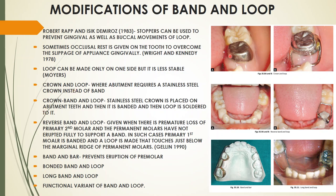Crown and loop: when the abutment tooth is grossly destructed, a band cannot be placed, so a stainless steel crown is used instead — this is the crown and loop modification. Crown band and loop: a crown is placed, then a band, then soldered to the loop. Reverse band and loop: used when the primary second molar is lost and the permanent molar has not fully erupted to support a band — the primary first molar is banded and the loop touches just below the marginal ridge of the permanent molar.